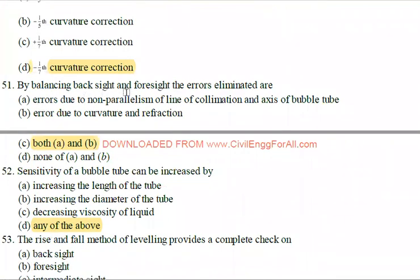Next: By balancing backsight and foresight, what errors are eliminated? The error due to non-parallelism of the line of collimation and axis of the bubble tube, and the error due to curvature and refraction.